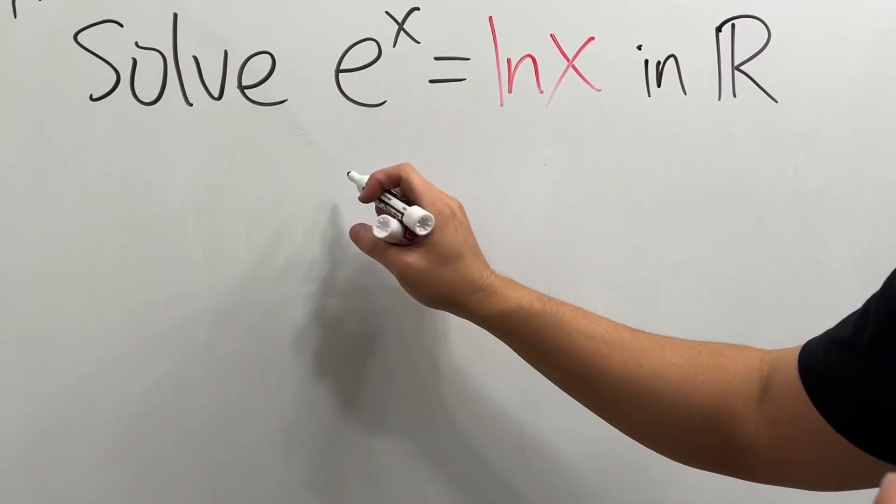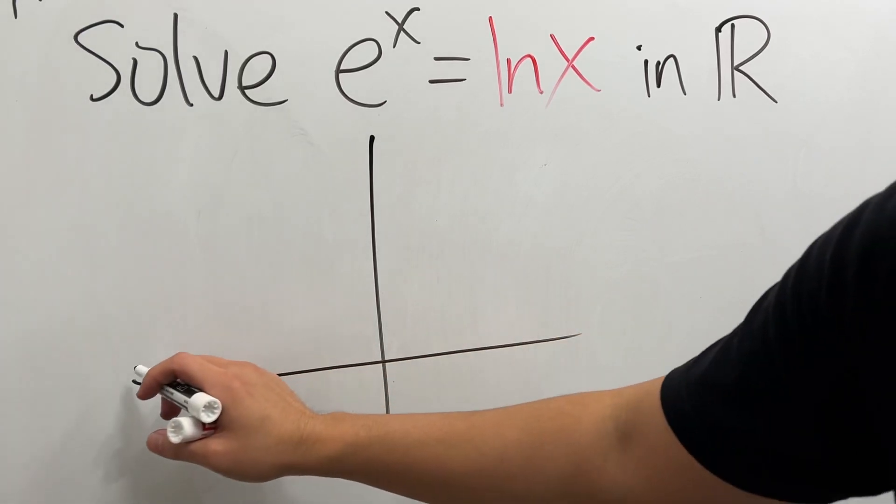let's take a look at the graph of e to the x, which is just the exponential function, looks like this.